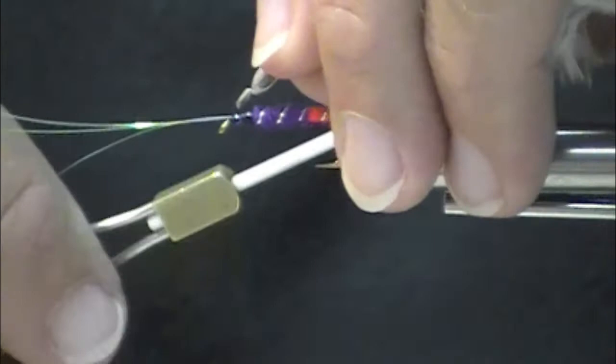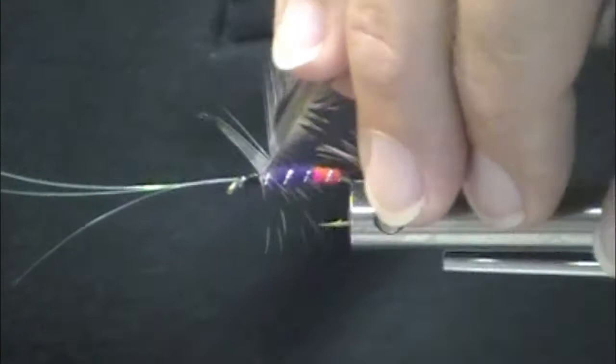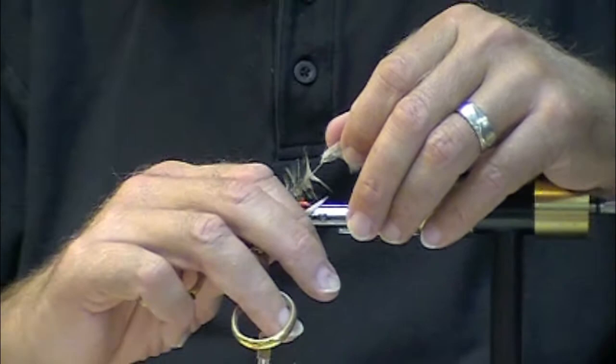Now you could use a straight grizzly, that would be just fine. But if you want to be a bit of a traditionalist, now I'm folding that hackle just gently, running my scissors along that. And that helps, helps make a V-shape, helps that hackle lay back.